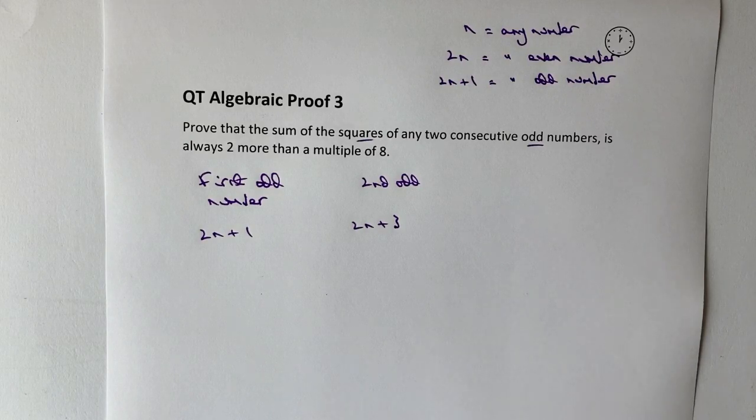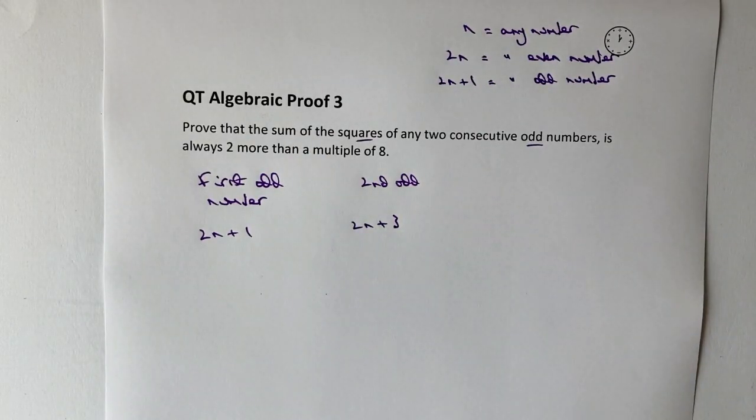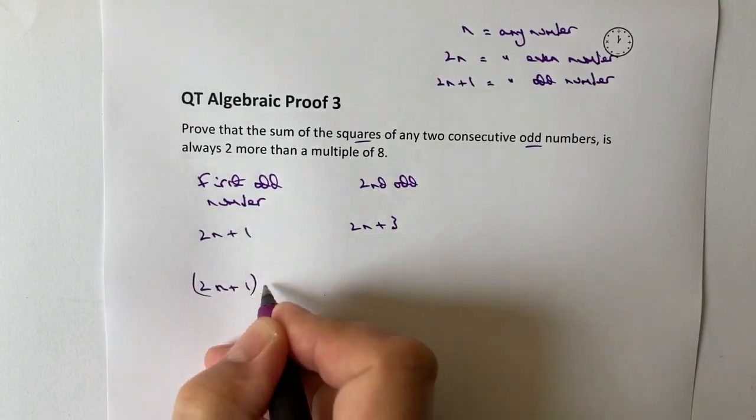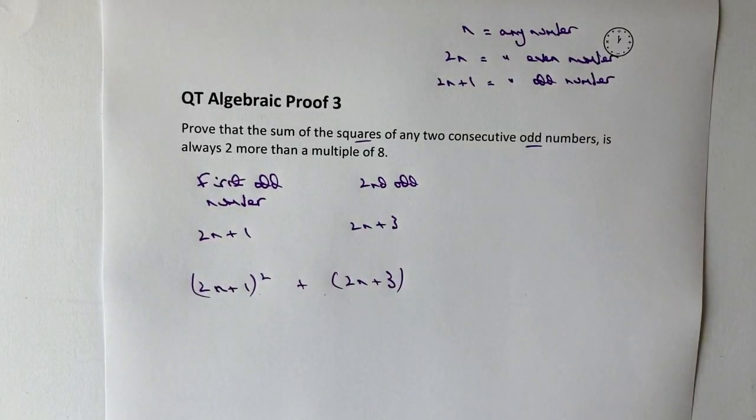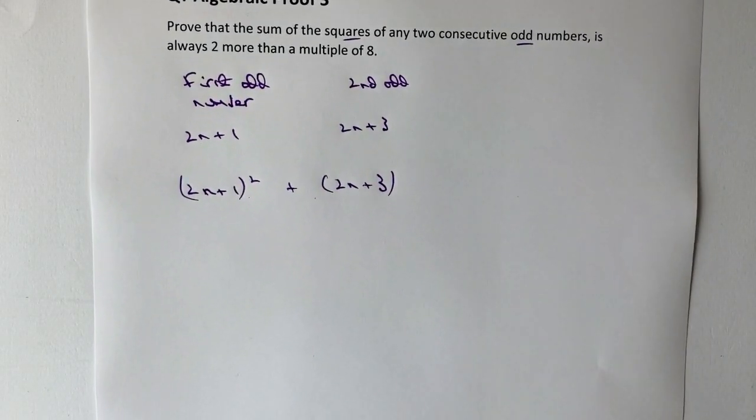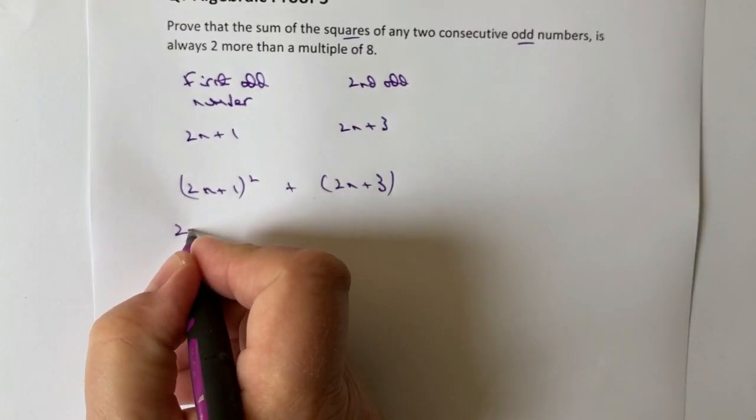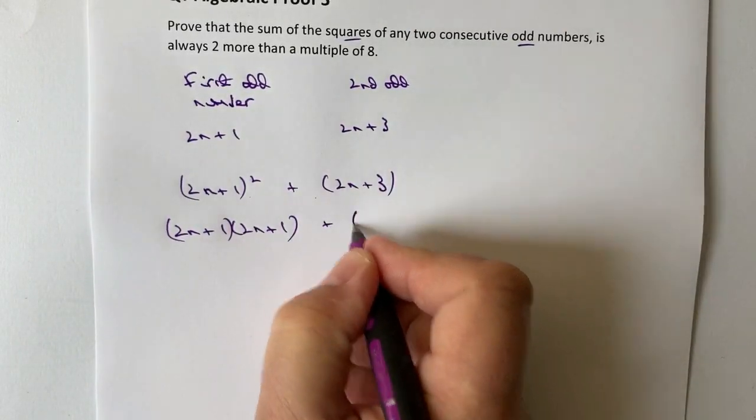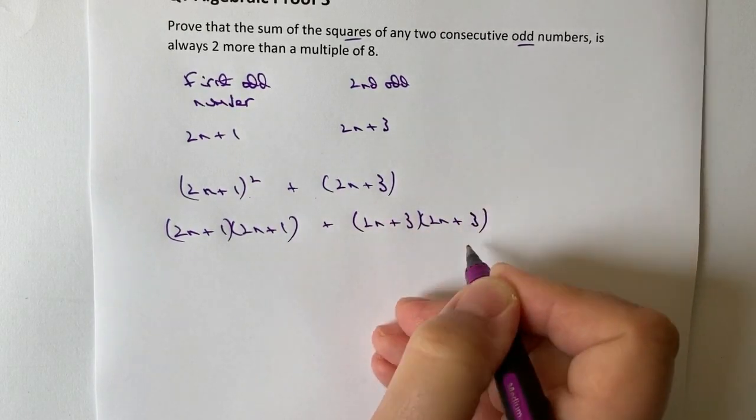And what we're going to do then is take these two terms and square them. And also then it says we're going to sum them. So we're going to add them together. So the first thing is I'm going to take 2n plus 1 and I'm going to square it and then I'm going to add it to 2n plus 3. Now, it looks like it's going to get a little bit complicated. So I'm going to give myself plenty of space to actually work through. So let's have a look at the first one. So I've got 2n plus 1 multiplied by 2n plus 1. And that's going to be plus 2n plus 3 multiplied by 2n plus 3.